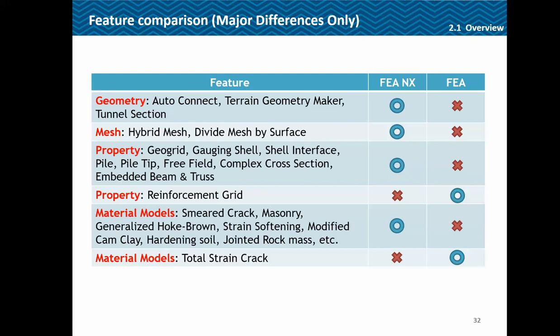Reinforcement grid was available in FEA but is not in FEA NX, since it was an approximate way of setting up reinforcement which has now been removed as actual reinforcement can be defined quite easily in FEA NX. Various material models like smeared crack, masonry, generalized soil grounds, softening, soil, and modified cam-clay have been added.